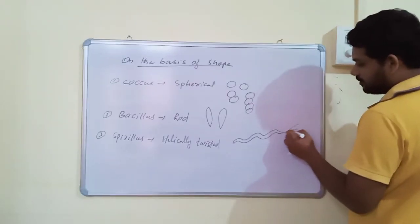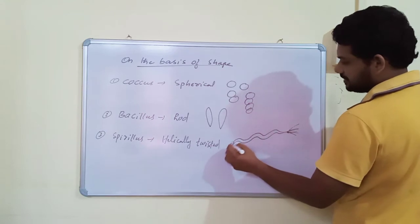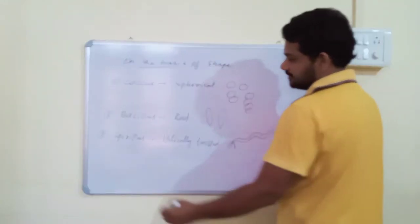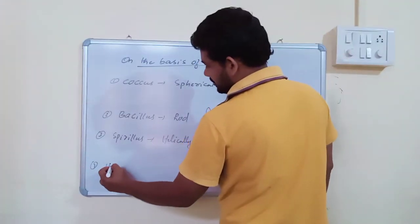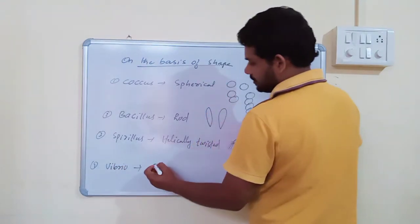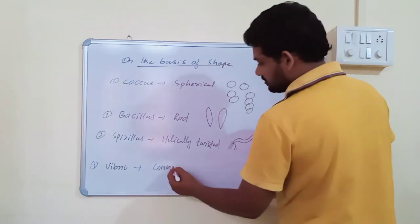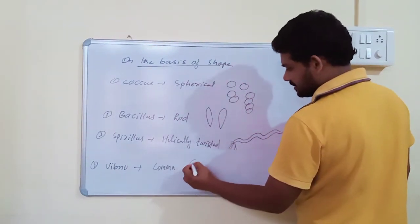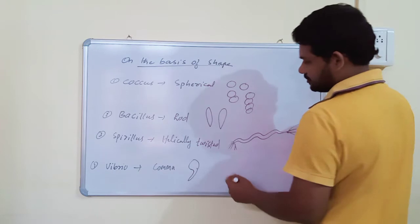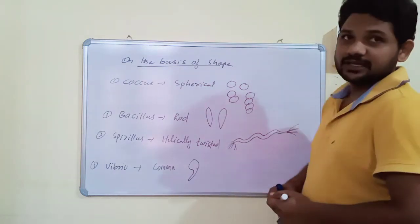At the end, these bacteria possess large number of flagella. Next, Vibrio. Vibrio, they are comma-shaped. Vibrio cholerae, cholera-causing bacteria is called Vibrio cholerae. It is comma-shaped.